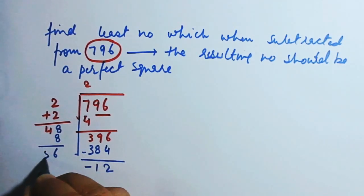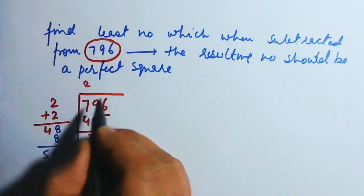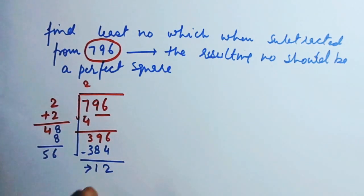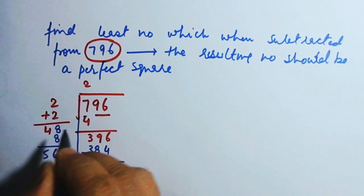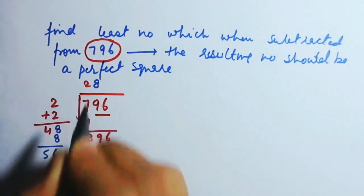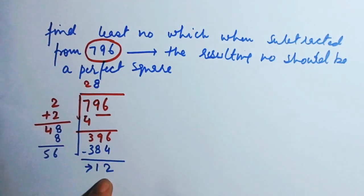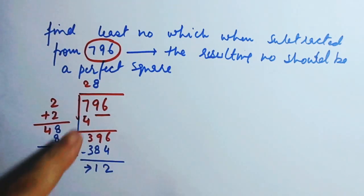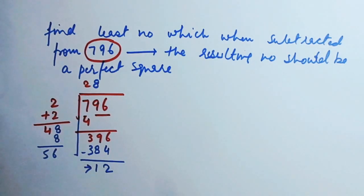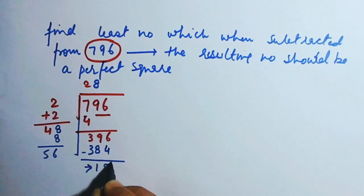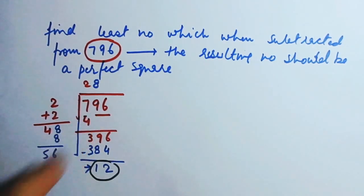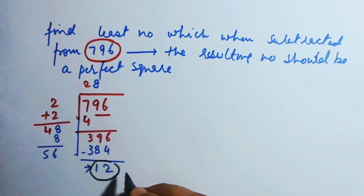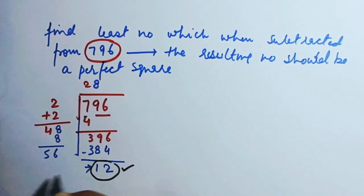Here we get 12 as a remainder. The quotient generated was 28, and 12 remains. Now, if this 12 remains, I think that if I subtract 12 from 796, it will be a perfect square — because when we found the square root, this extra 12 came out. So when we subtract 12 from 796, that particular number would become a perfect square.